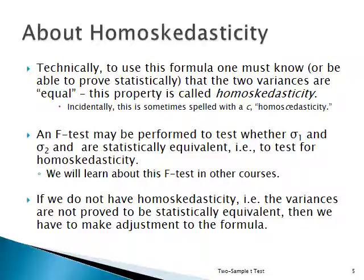If you don't have homoscedasticity — and let's say you show what we call heteroscedasticity, which means the variances are not statistically equivalent — then you adjust the formula. We're not going to learn about it, but just be aware of it. For this course, we're going to assume that we do have homoscedasticity.